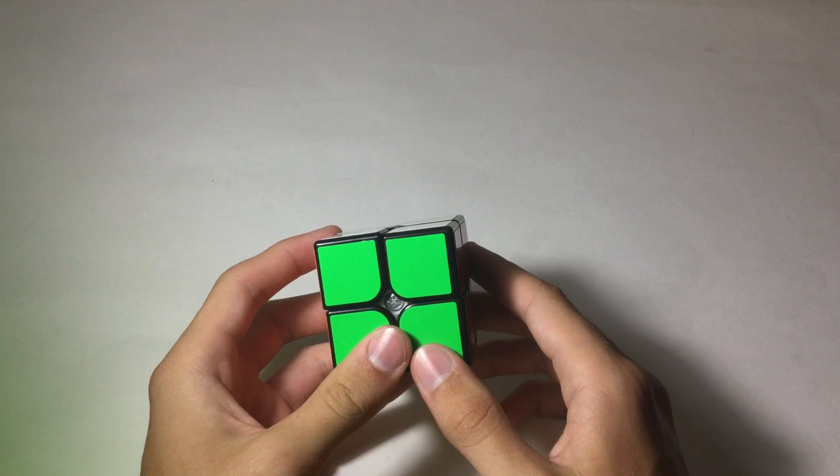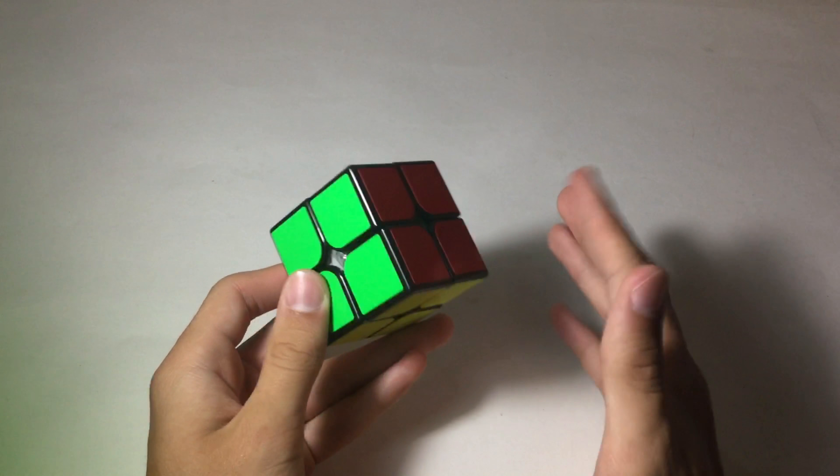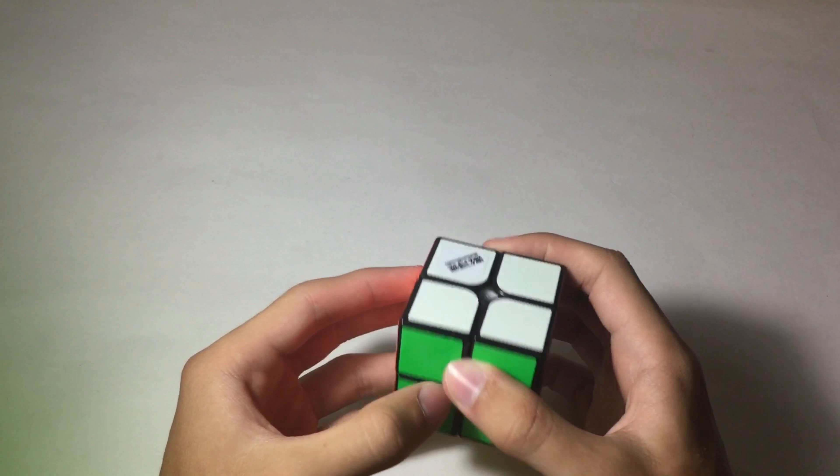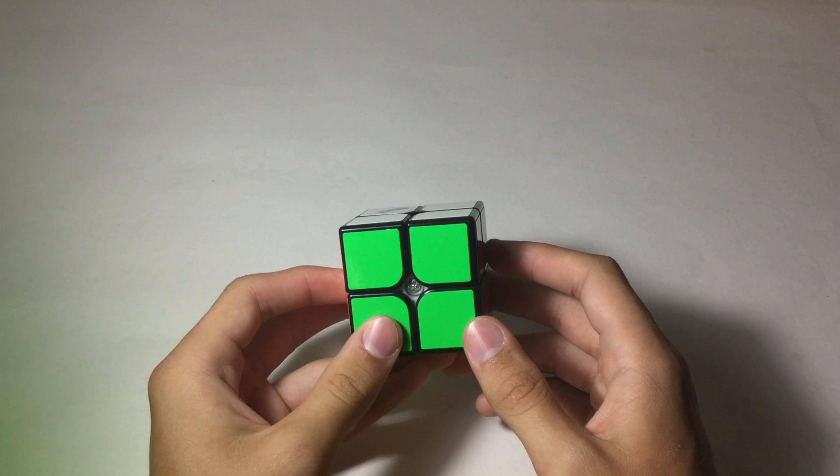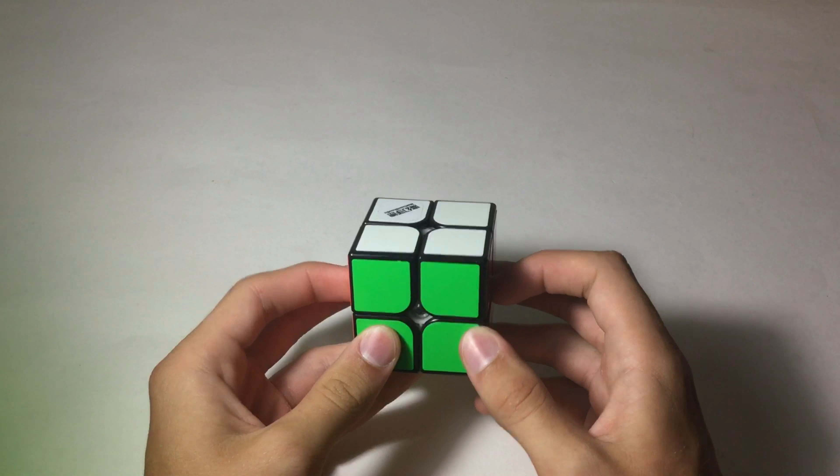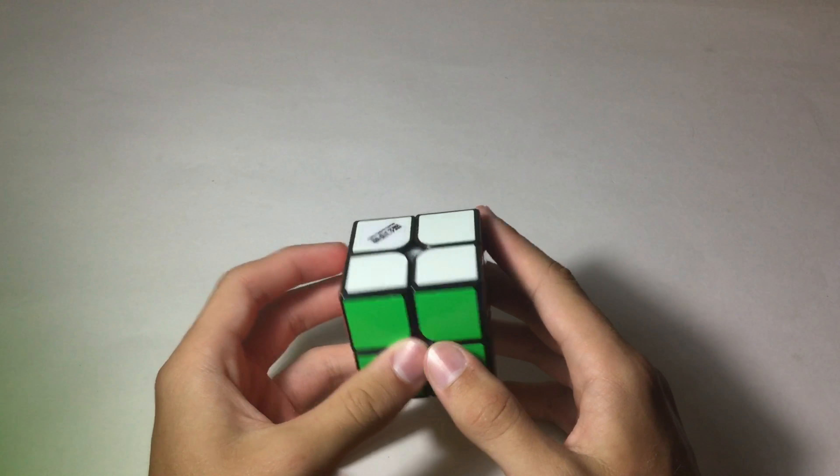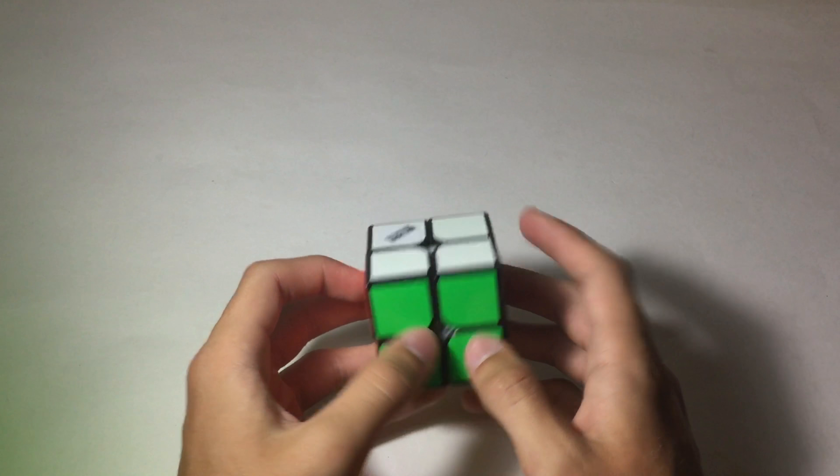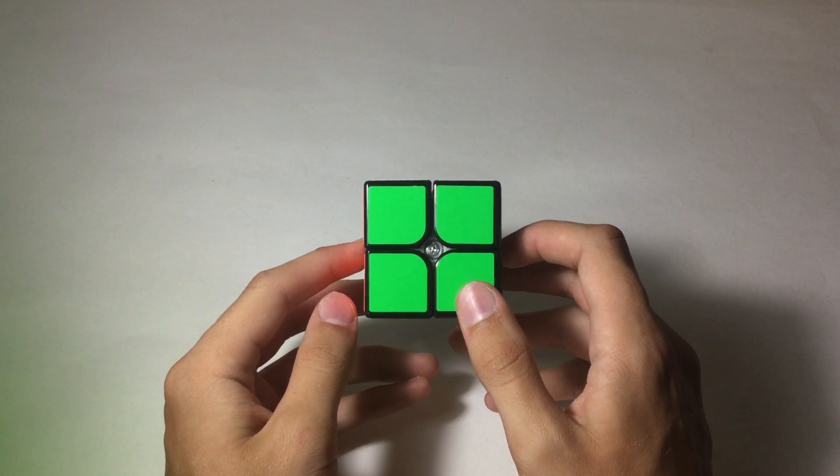I do use the Ortega method. I average around 8 seconds, so if you are trying to get like sub 10 on 2x2 with Ortega this might be the video for you. I will try to provide you guys with the best tips and tools that I know for Ortega. All of these scrambles in this video will just be random hand scrambles. This is just an informational video for 2x2 Ortega solvers that are trying to get sub 10 because I average around 8 seconds.